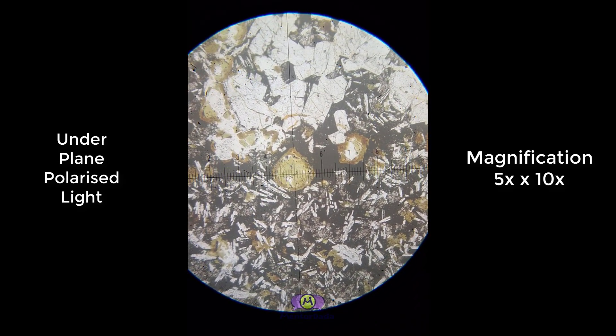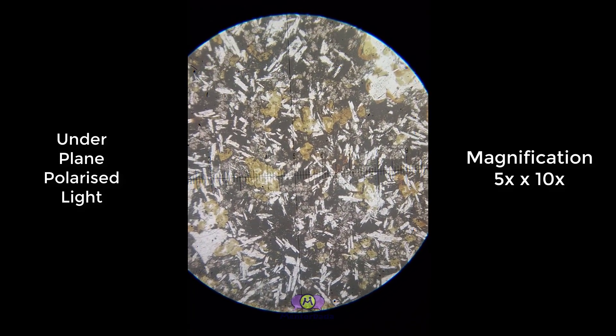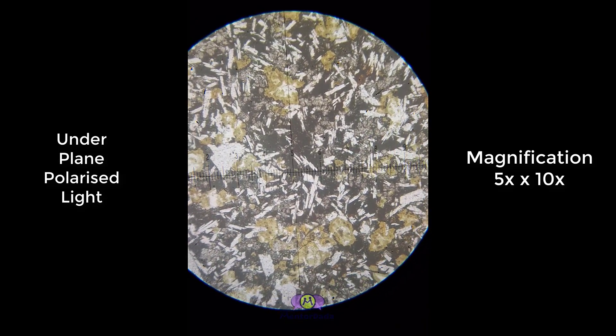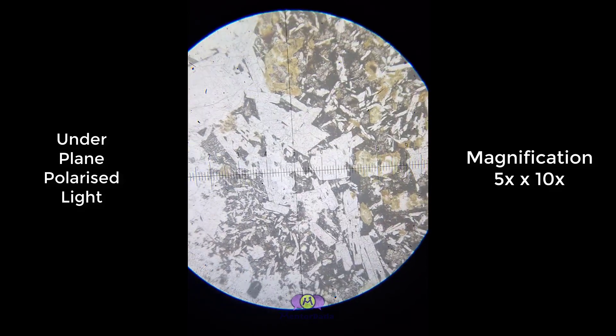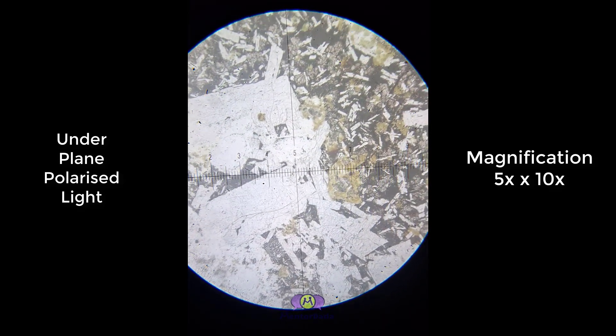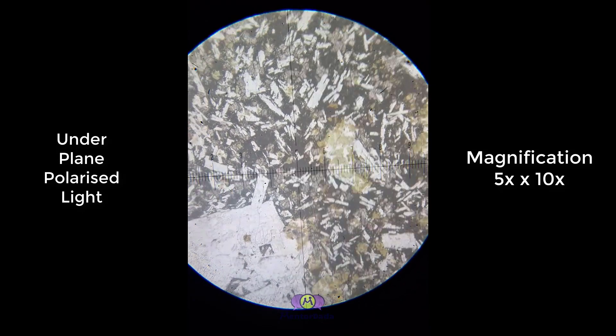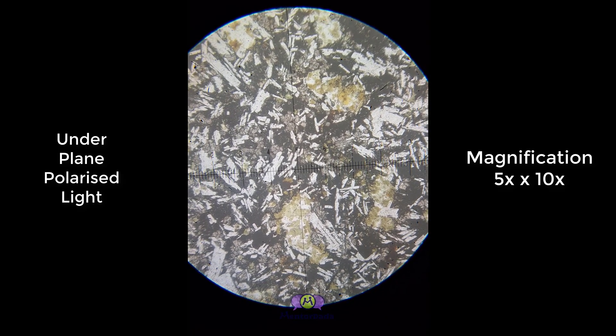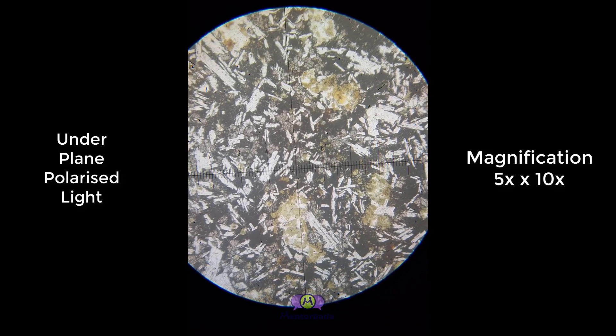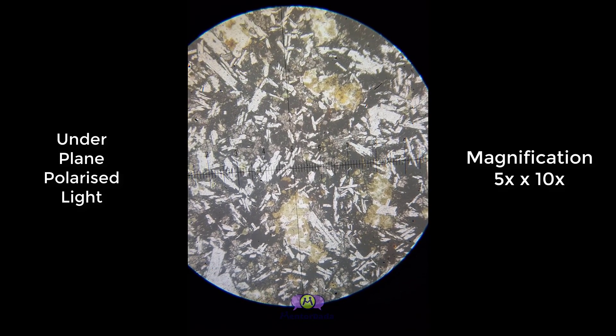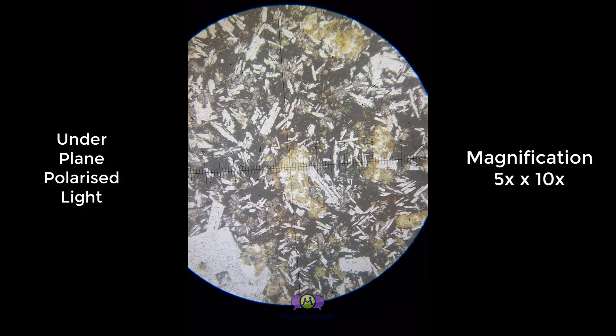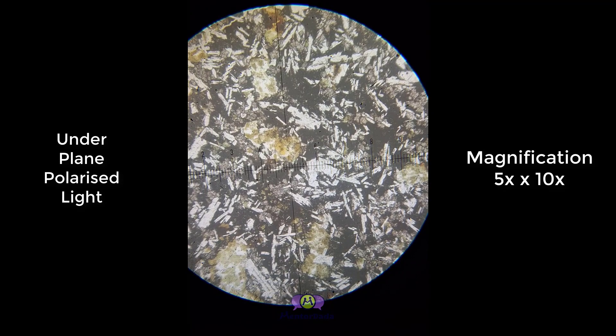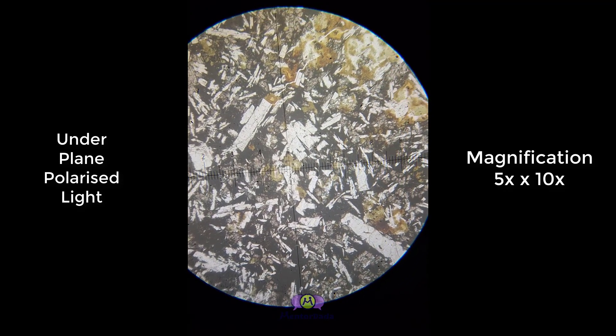The patches are mainly glassy material. Lots of plagioclase laths are also there, which are white colored and characterized by low refractive index. These black colored materials or opaque minerals are mostly magnetite, and the greenish patches are glassy material. Now we will observe this thin section under cross-polarized light.